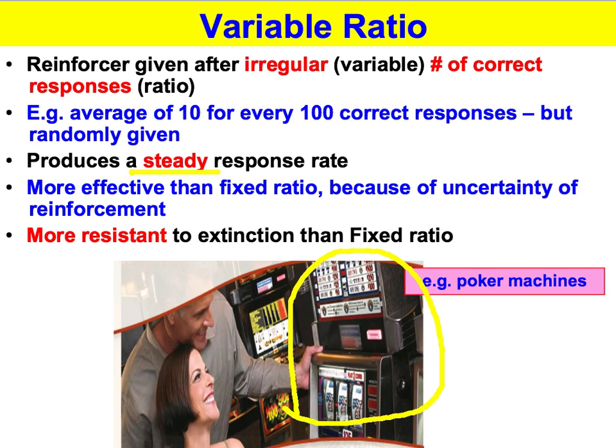It's steady because you never know when the reinforcer is coming. Now let's say you've got a dud machine that no longer pays out — you might have had 50 goes in a row and it's not paying out. So it's actually more resistant to extinction than fixed ratio, because if you knew it was going to pay out every tenth go and it didn't, you'd know you had a dud machine. But with a variable ratio schedule, your mindset is 'it's going to pay out soon, I'm going to hit the jackpot any minute.'